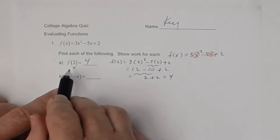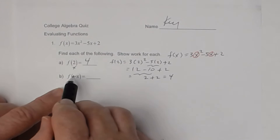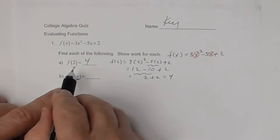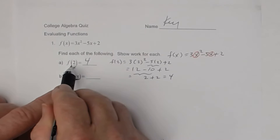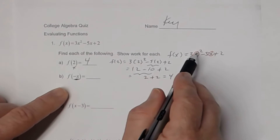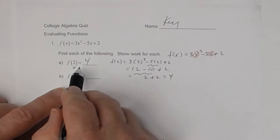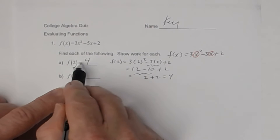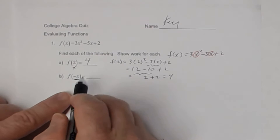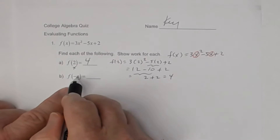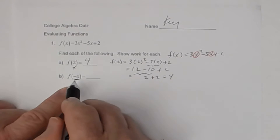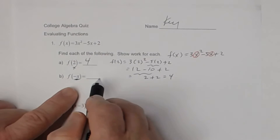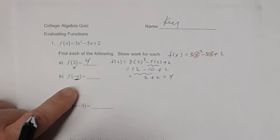Same thing here, except this time you have a variable expression. That's a variable expression — this was a number. When you evaluate a function at a number, you're going to end up with a number. When you evaluate a function at a variable expression, you're going to end up with a variable expression.